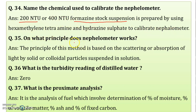On what principle does the nephelometer work? The principle of this method is based on the scattering or absorption of light by solid or colloidal particles suspended in the solution. When light falls on the sample cell containing colloidal particles, some radiation is absorbed. With distilled water, all light is transmitted. This principle is used in the working of the nephelometer.